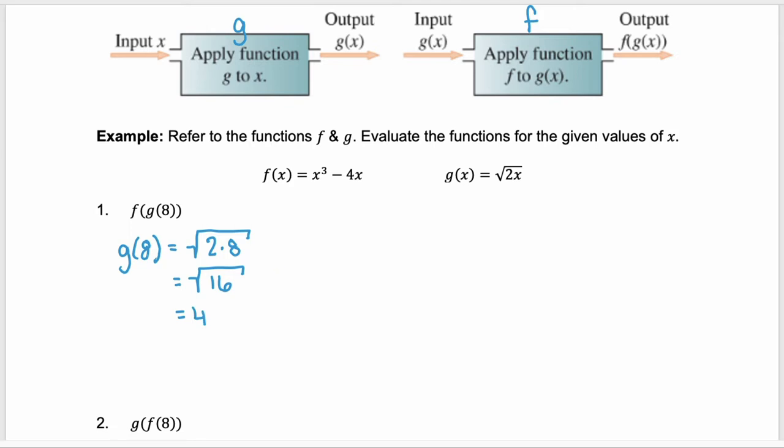We have the output g of eight, which is four. We take that and we put it into the f function. So f of four is what we need to find. In f of four, we're substituting four into our f function. So we have four cubed minus four times four. Four cubed is 64 minus 16, which is 48. So we can say f of g of eight is equal to 48.